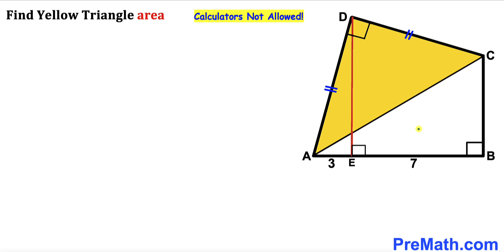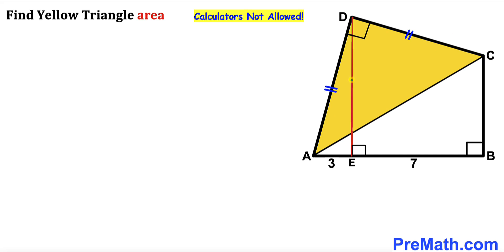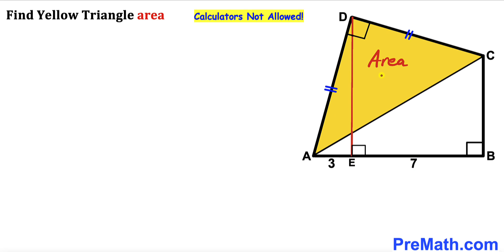Welcome to Pre-Math. In this video we have got two right triangles, triangle ABC and yellow right triangle ACD, put together as shown in the diagram. The side lengths AD and CD of the yellow triangle are equal in length. Moreover, DE is the perpendicular, so segment AE is 3 units and segment BE is 7 units. Our task is to calculate the area of yellow triangle ACD without using calculators.